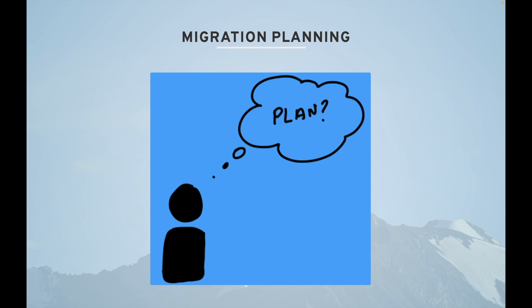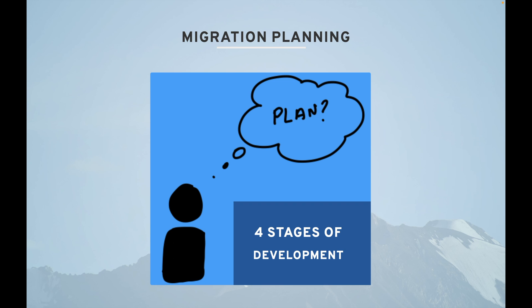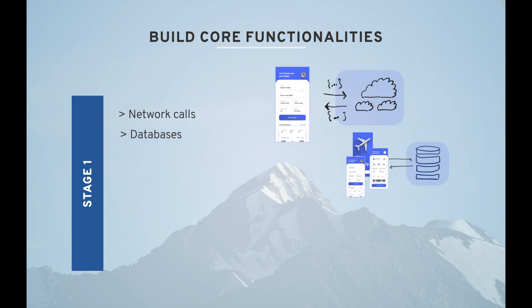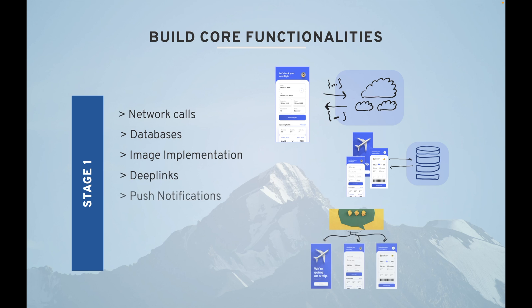Now it is the right time to think about migration planning. I will show you what I was thinking when planning this migration and what stages I considered. I had four stages. Stage one is building core functionalities: network calls, databases, image implementation, video playing, push notifications, analytics, and crash reporting. All these are very critical and important, and I call them core functionalities — you have to build these first.